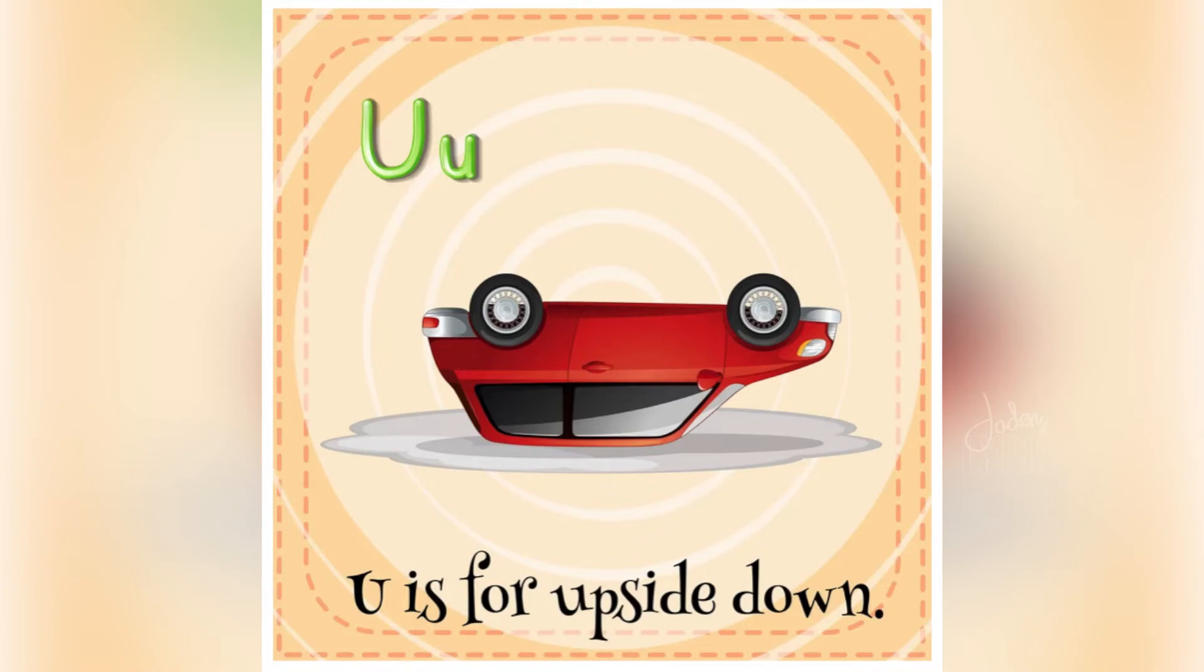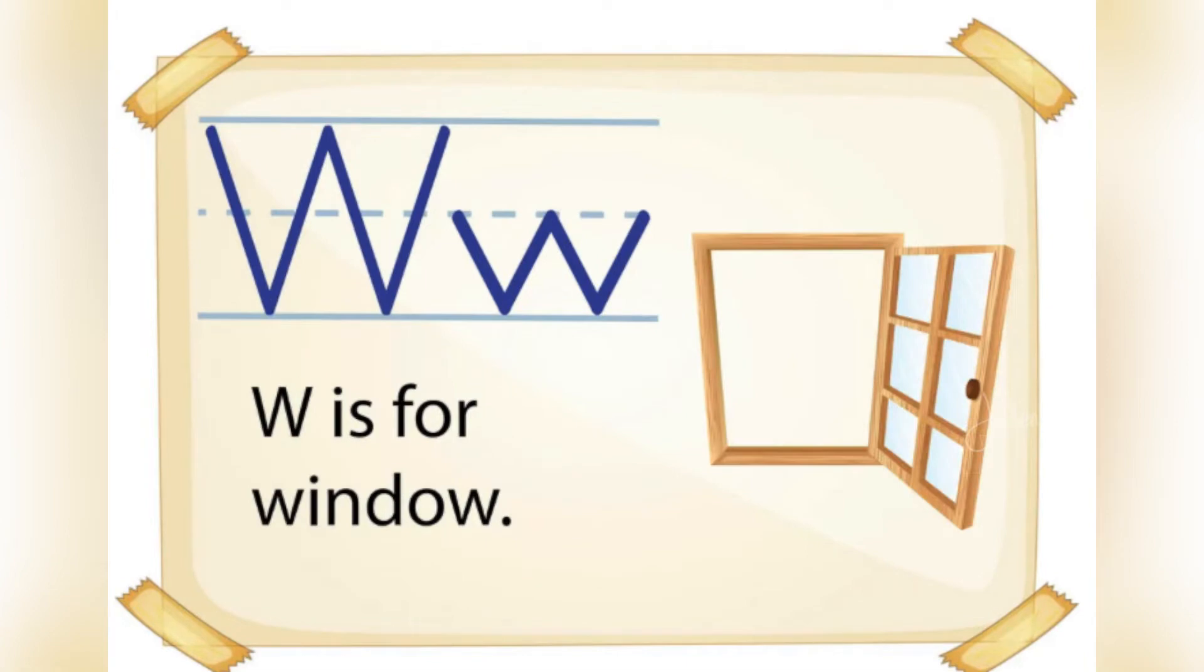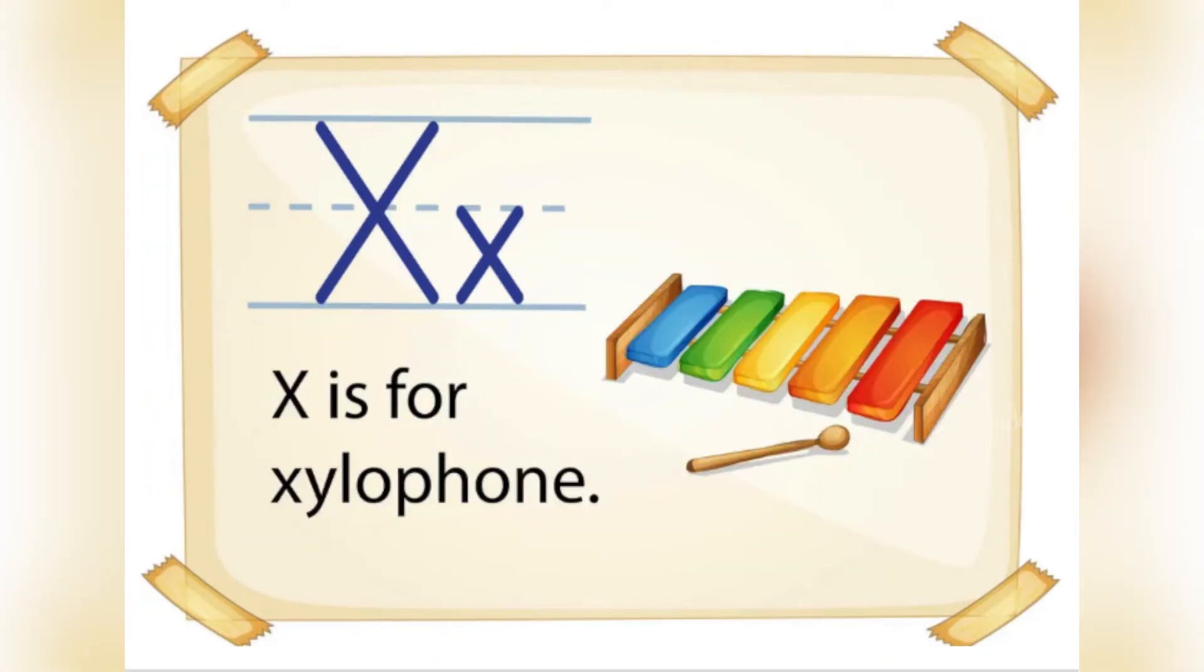U is for Upside Down. V is for Viking. W is for Window. X is for Xylophone.